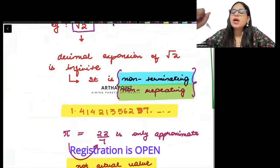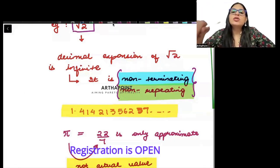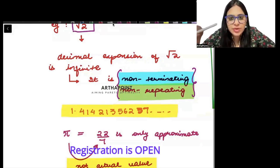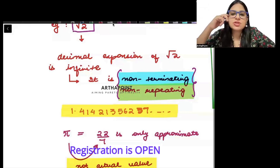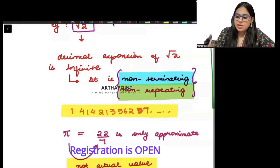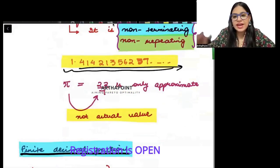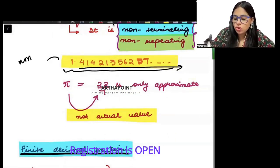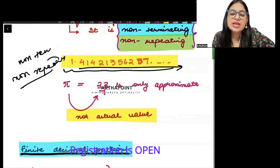But if a number is non-terminating and non-repeating, then I cannot represent it in the rational form — such numbers are called irrational numbers. An example is root 2: you can see that nothing is repeating and it doesn't stop — it is non-terminating, non-repeating. Similarly, pi is also non-terminating and non-repeating. Such numbers are called irrational numbers.